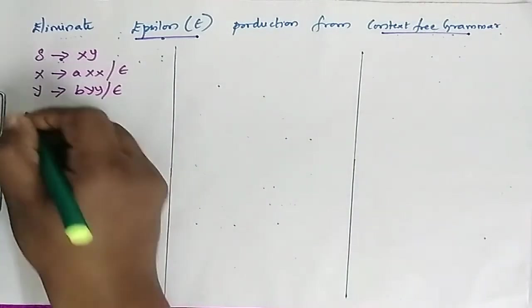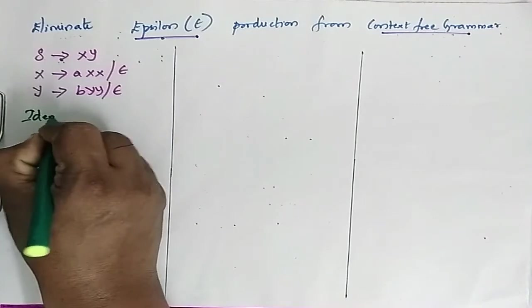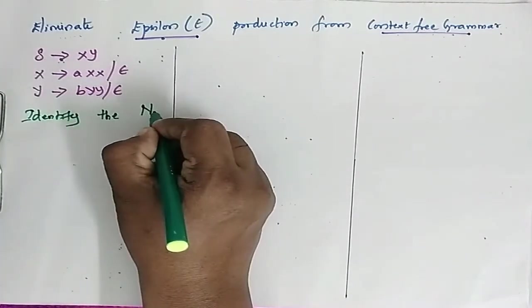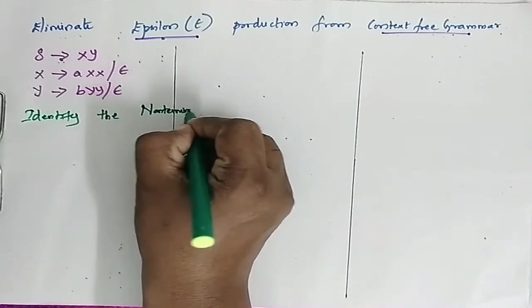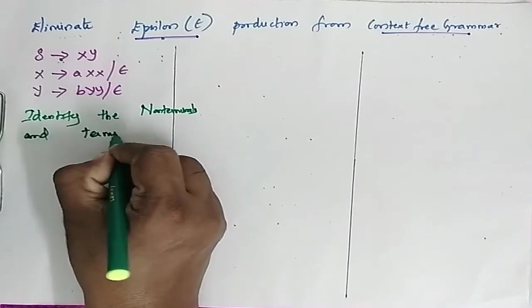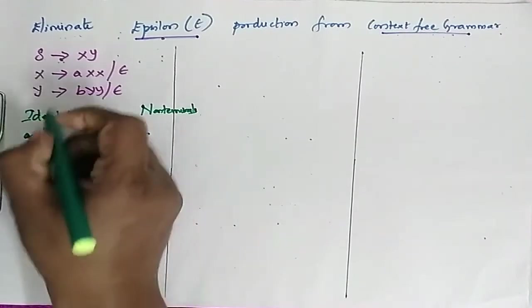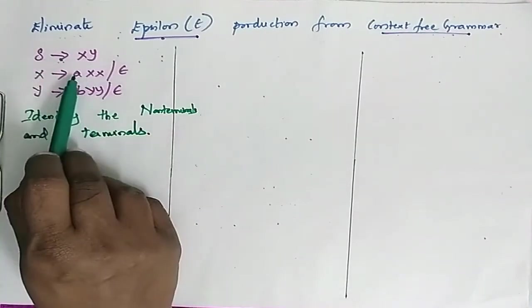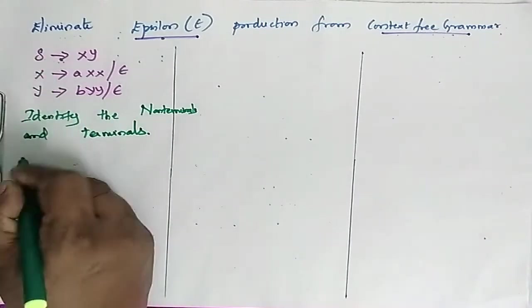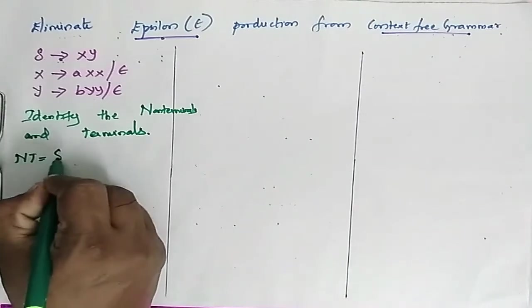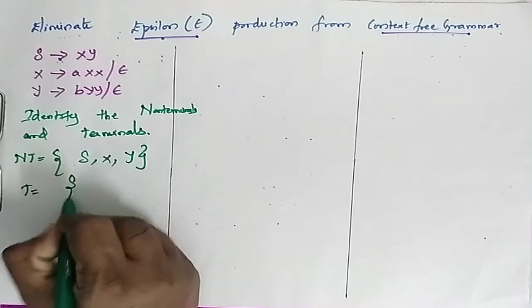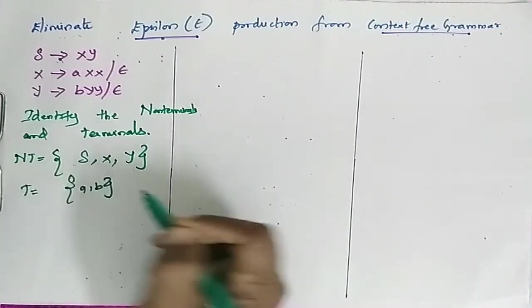Now identify the terminals and non-terminals. The terminals are A and B. The non-terminals are S, X, Y.